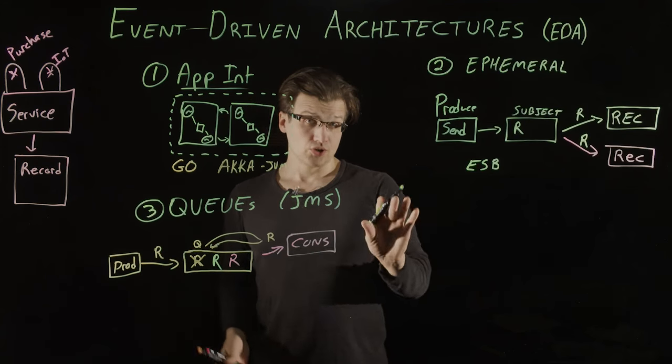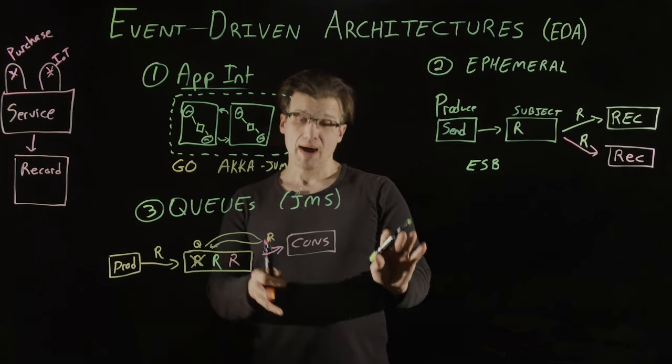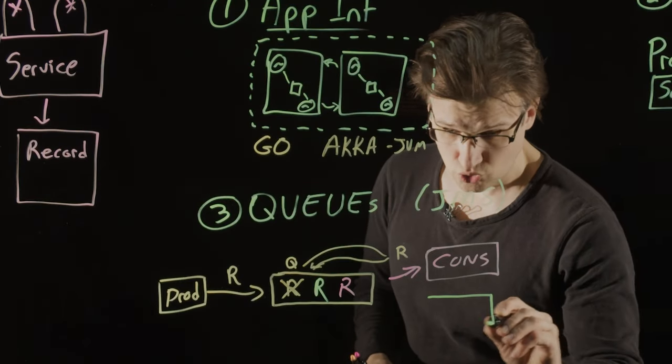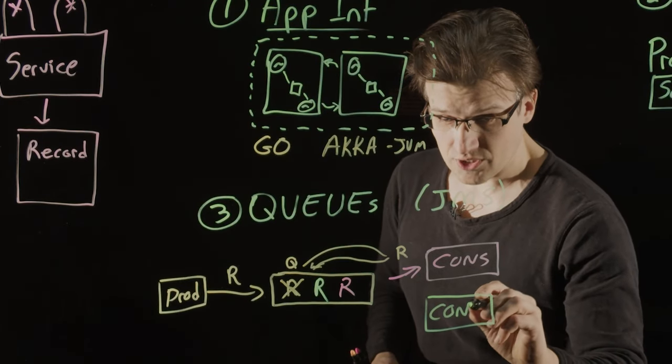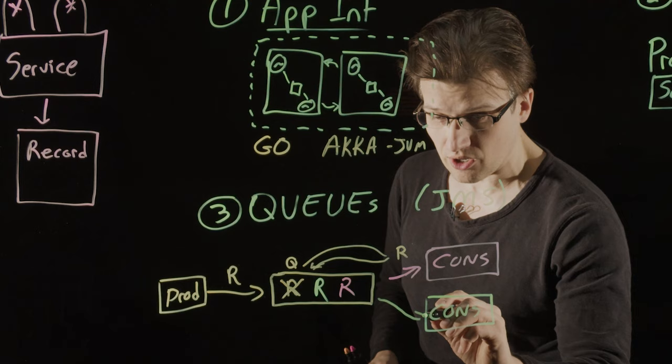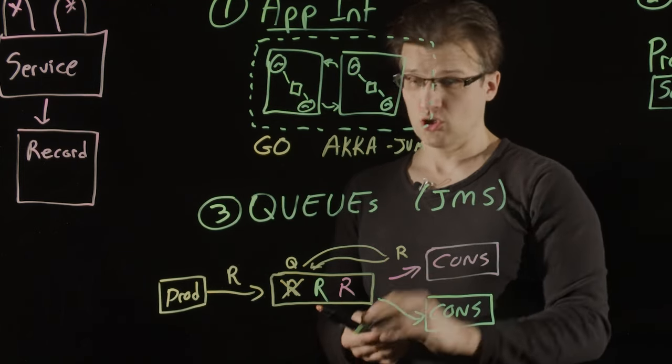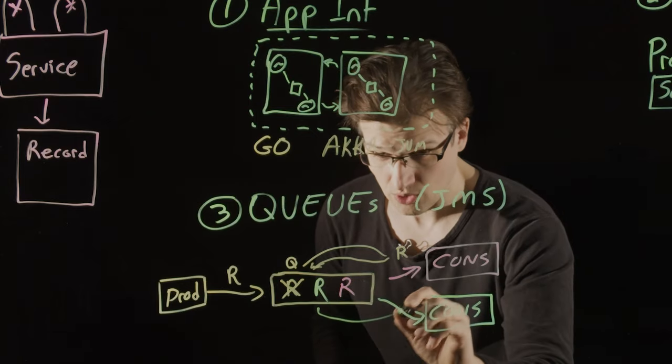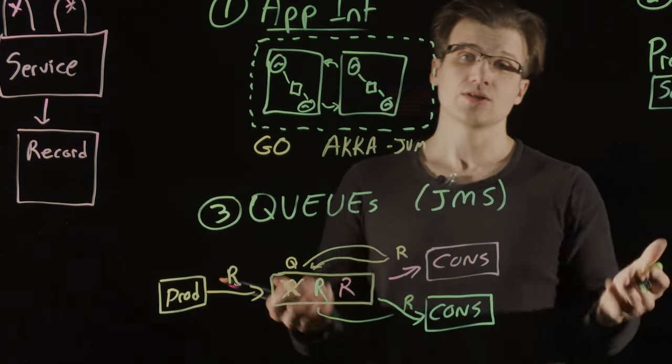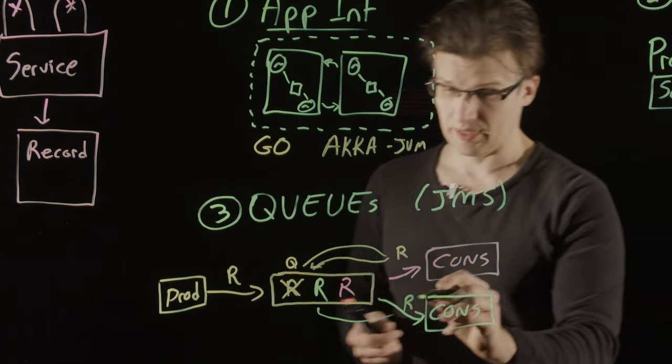Now, you can have multiple consumers for a queue, but if you do, these consumers are going to share the workload. So while the first record went to our first consumer, the second record will go to our second consumer here. This is also known as a round-robin consumption.